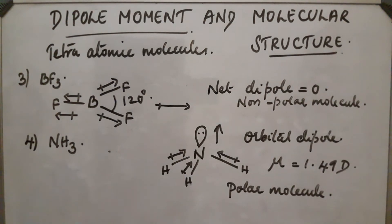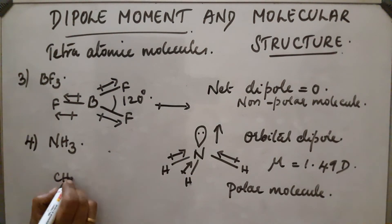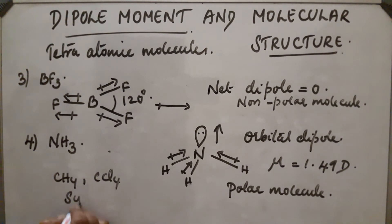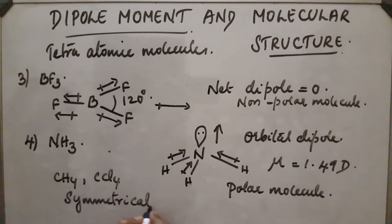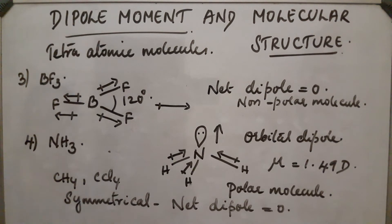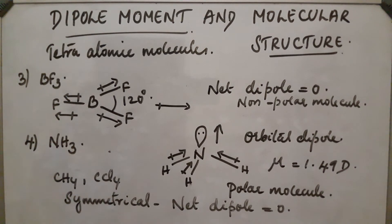In the case of CH₄ and CCl₄, these are also tetraatomic molecules and both are symmetrical in shape. So the dipoles cancel each other and the net dipole will be 0, making them non-polar molecules. These are some examples of tetraatomic molecules and their dipole moments.